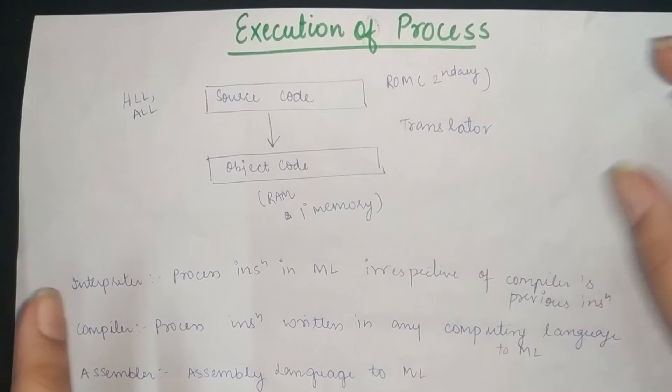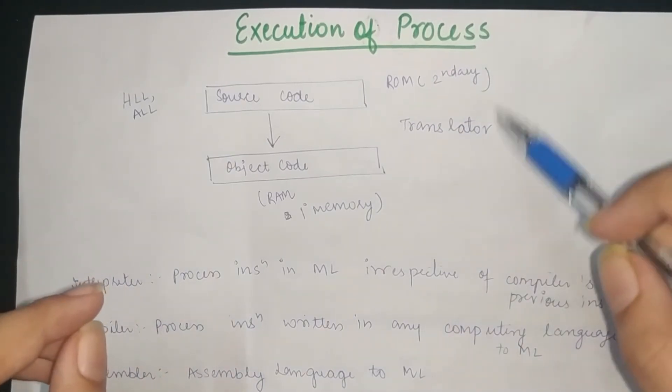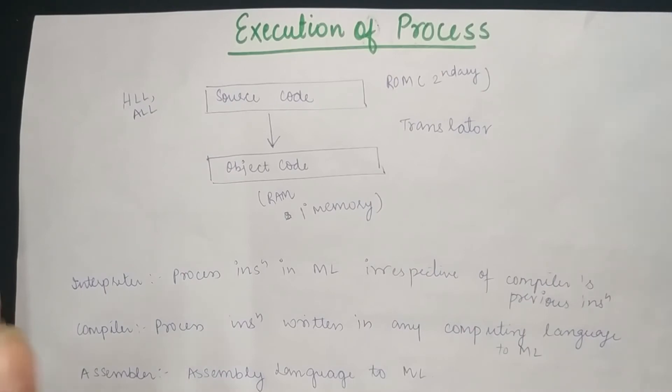Source code is written in high level language or assembly language. Machine language is present in ROM, which means secondary memory.